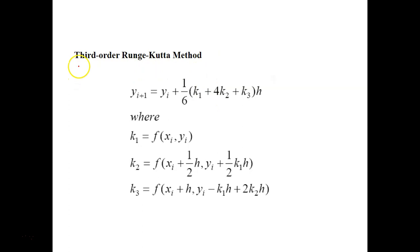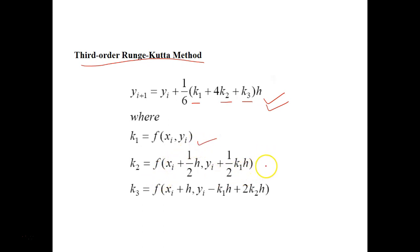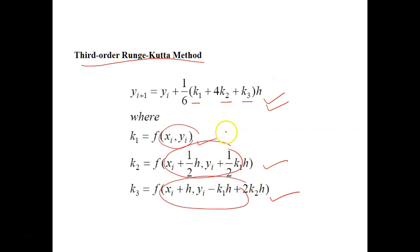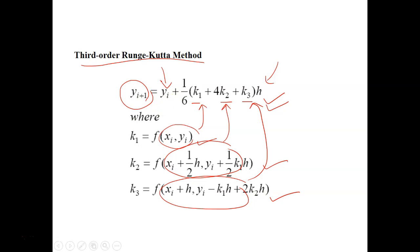Next is the third order RK method. The equation calculates the new value of Y using three slopes: k1, k2, and k3. k1 is the formula for the slope at the initial point, k2 is the formula for the slope at the second point, and k3 is the formula for the slope at the third point. You calculate each slope, substitute all values along with H and Y(i) into the equation, and you get Y(i+1) — very simple.